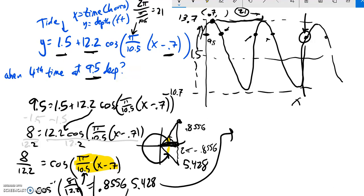I split it into two cases. In other words, this pi over 10.5 times x minus 0.7 is equal to 0.8556. And I could write another full equation if I wanted, but I'm just going to keep them together. It's also equal to 5.428. Either one of those values, if this ends up being either one of those values, then cosine of it will be that.